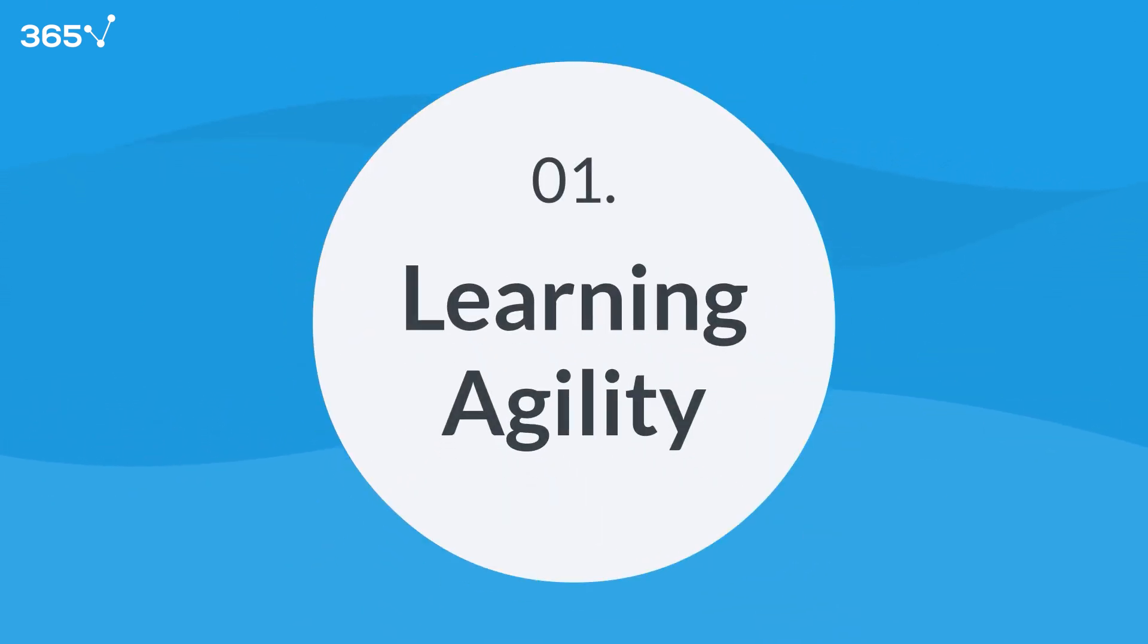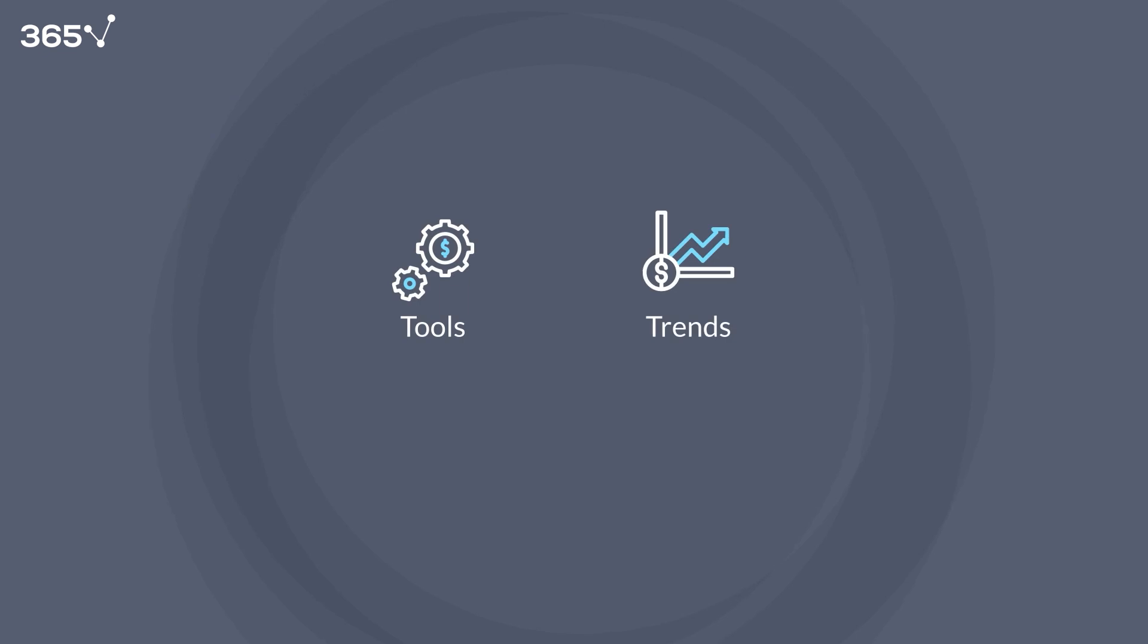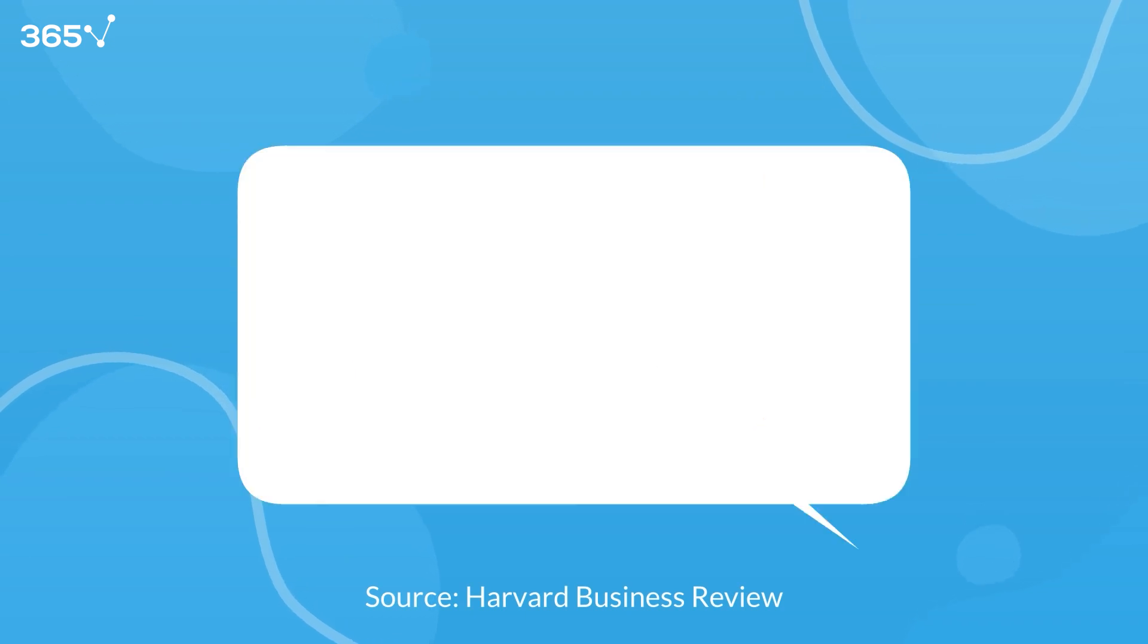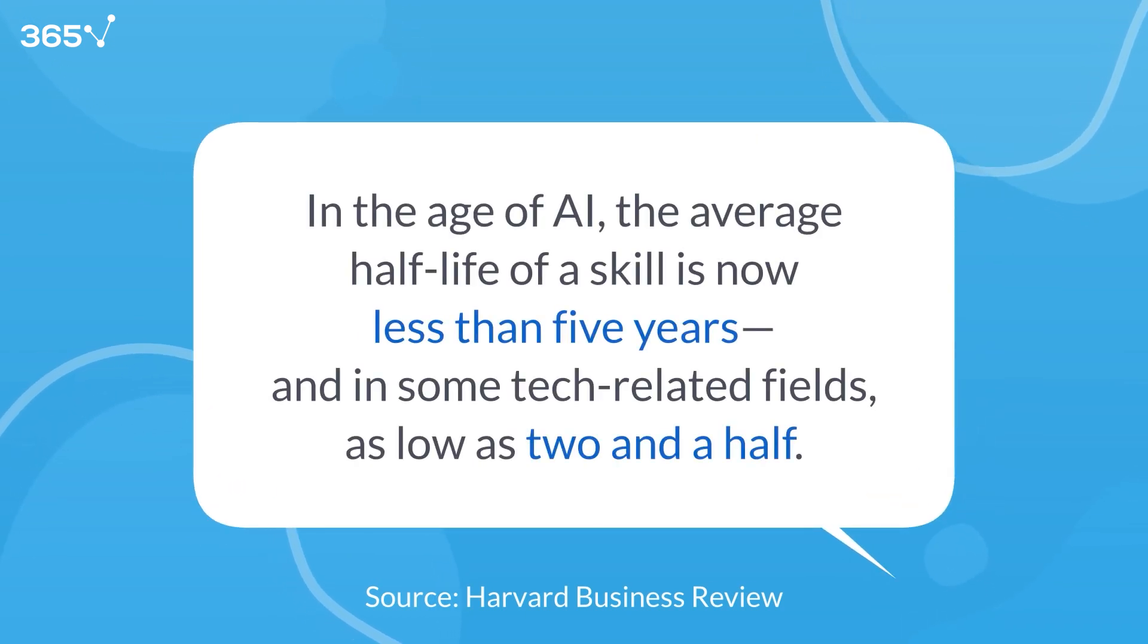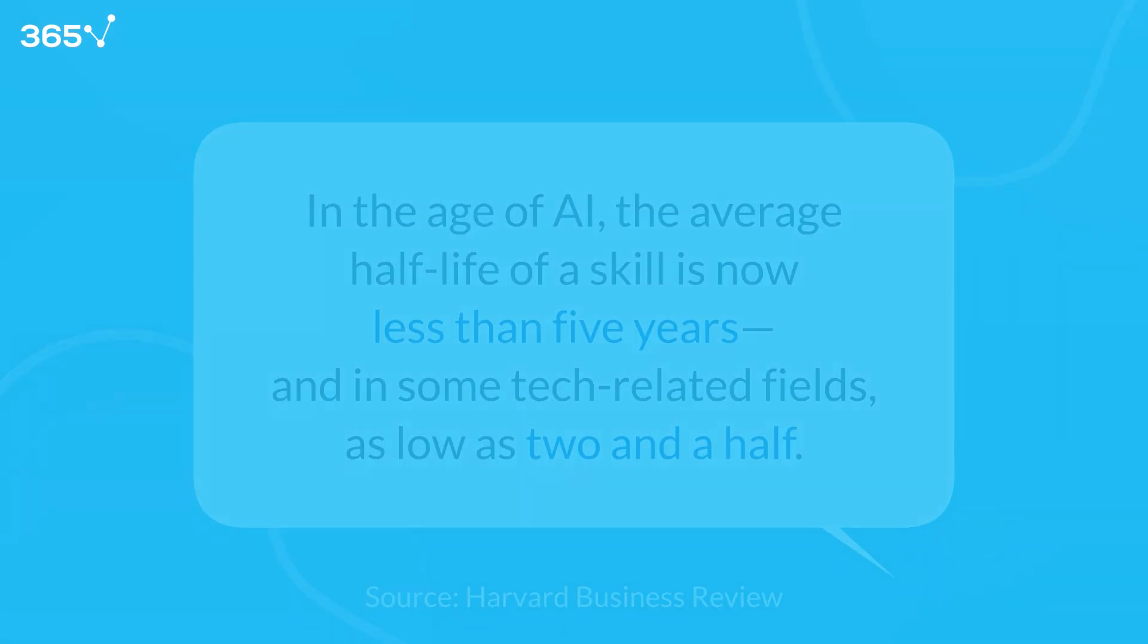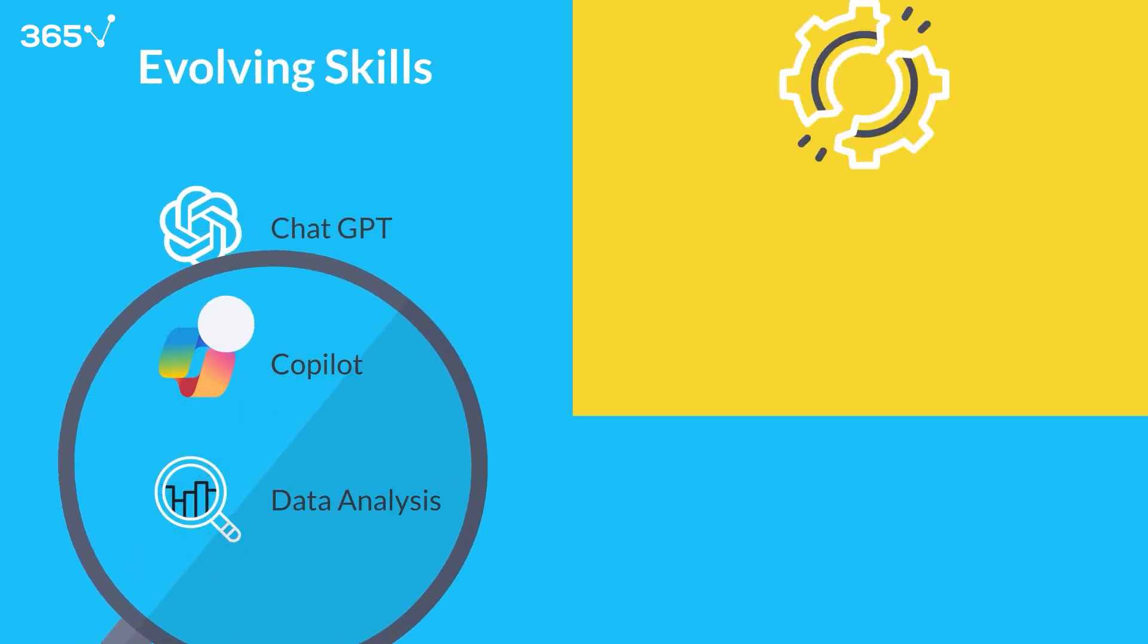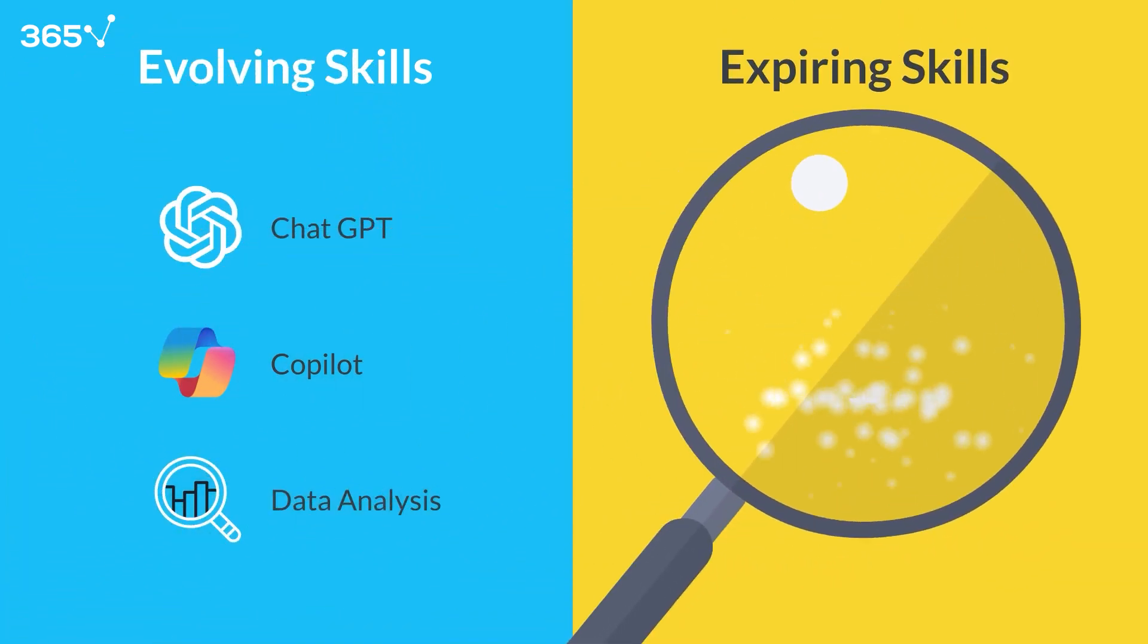Let's start with possibly the most critical skill in finance today: learning agility. Because let's face it, the tools, trends, and expectations in this field are changing faster than ever. Researchers at Harvard estimate that in the age of AI, the average half-life of a skill is now less than five years, and in some tech-related fields, as low as two and a half. So if you want to stay relevant, you need to focus on skills that evolve with the world, not ones that expire as quickly as they're learned. That's where learning agility comes in.